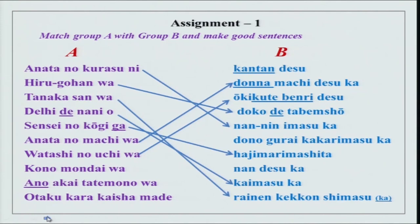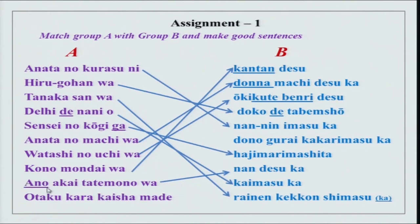Watashi no uchi wa aokikute benri desu. When you join i-adjectives with na-adjectives, the first adjective will change. The i-adjective changes to kute plus benri. Kono mondai wa kantan desu, or kono mondai wa kantan na mondai desu — the moment you use na, the noun is going to follow. Ano akai tatemono wa nan desu ka — ano is used because you are pointing at the tatemono, and the subject is known to both the speaker and listener.